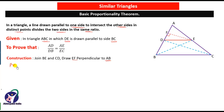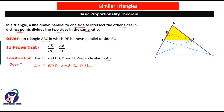Now we will see the proof. In triangle ADE, if we take AD as the base then EF will be the height of the triangle. Therefore we can find the area by the formula: area = half into base into height. So the area of triangle ADE equals one-half times AD times EF.